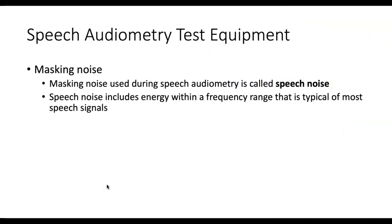The masking noise we use is speech noise — a noise that has the spectral characteristics of speech. It's an effective masker for speech because it has the same spectral characteristics. It's a broadband noise shaped to mask speech most effectively. The speech spectrum has more energy below about 1000 Hz in the low-frequency region and less energy in the high-frequency region — it slopes with less energy in the high frequencies.